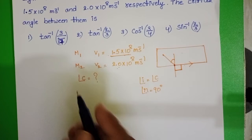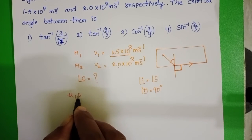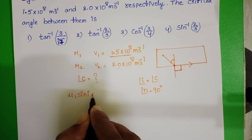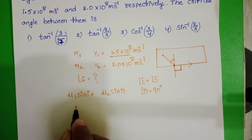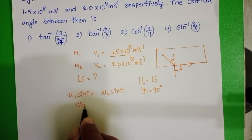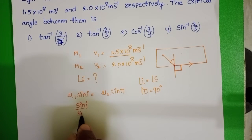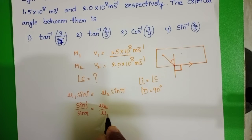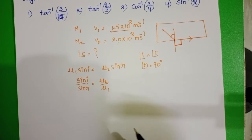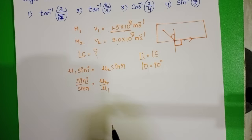Apply Snell's law: mu1 sin i equals mu2 sin r. Sin i by sin r equals mu2 by mu1. Refractive index is inversely proportional to the speed of light.